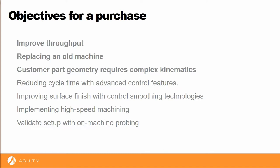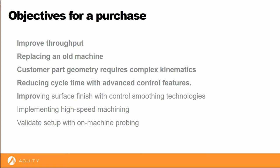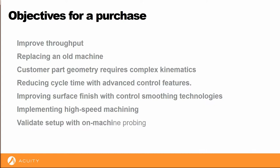Or you may already have 5-axis machines, but wish to reduce cycle time by using tool center point control and allowing rapid moves closer to the part surface. Or the goal may be to reduce handwork by implementing smoothing technologies available on modern controls. Many shops are investigating machine tool purchases to facilitate the adoption of high-speed machining, increasing cutter life, and reducing cycle time. Or they wish to reduce scrap rates by utilizing on-machine probing to validate setups.